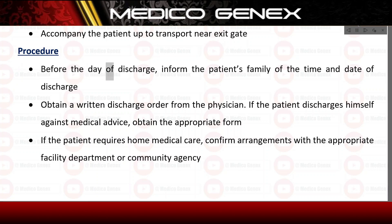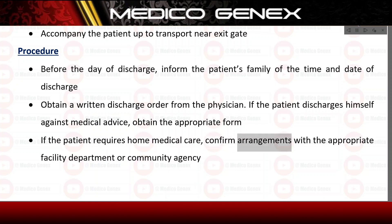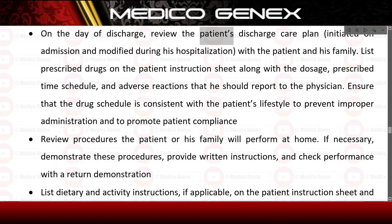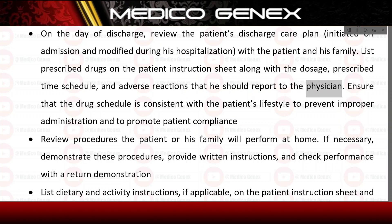Procedure: Before the day of discharge, inform the patient's family of the time and date of discharge. Obtain a written discharge order from the physician. If the patient discharges against medical advice, obtain the appropriate form. If the patient requires home medical care, confirm arrangements with the appropriate facility, department, or community agency. On the day of discharge, review the patient's discharge care plan, initiated on admission and modified during hospitalization, with the patient and family. List prescribed drugs on the patient instruction sheet along with dosage, prescribed time schedule, and adverse reactions to report to the physician. Ensure the drug schedule is consistent with the patient's lifestyle to promote compliance.